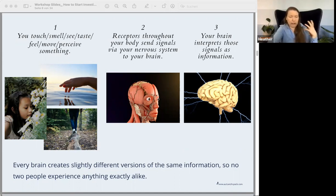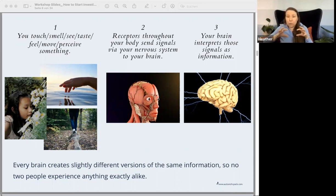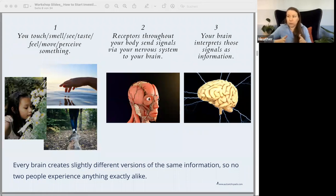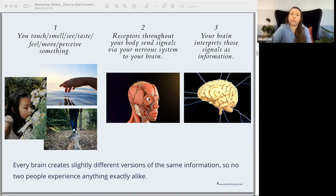Even those of us who have similar types of brain function — if you're autistic or ADHD or OCD or highly sensitive, whatever your version of how your brain works — even within those categories, everyone is different. No two people ever experience anything exactly alike, even when they're from the same family and in the same place, experiencing the same thing, touching the same thing. You're not going to experience it entirely alike because you have different nervous systems and different brains.